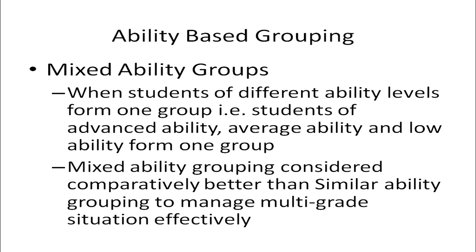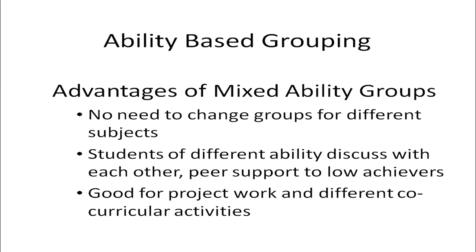The second type of ability-based grouping is mixed ability groups, where students of advanced, average, and low ability are placed together. Mixed ability grouping is considered better than similar ability grouping for managing multi-grade situations effectively. Its advantages include no need to change groups for different subjects, peer support for low achievers, and suitability for project work and co-curricular activities.